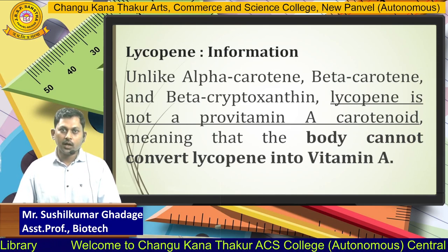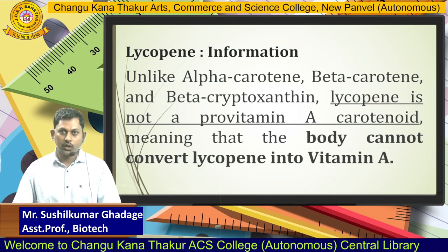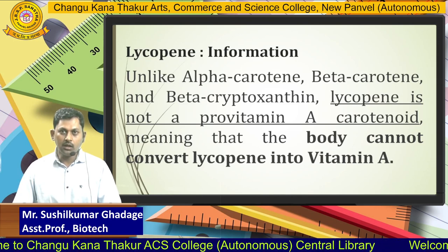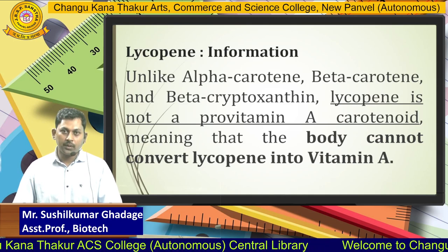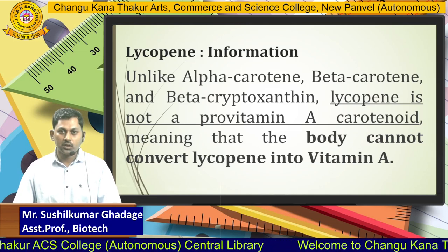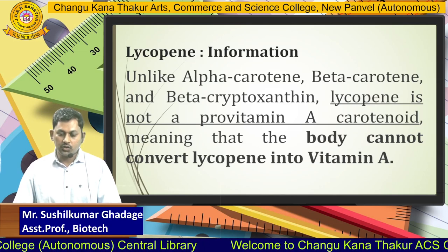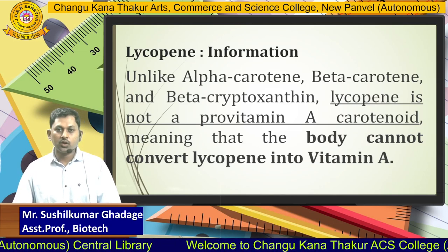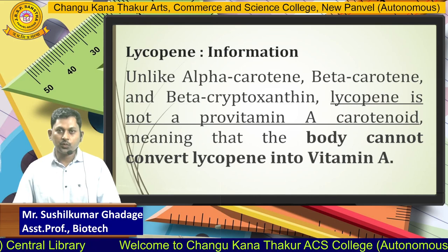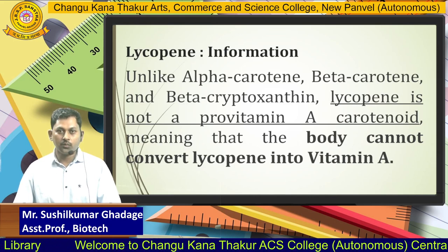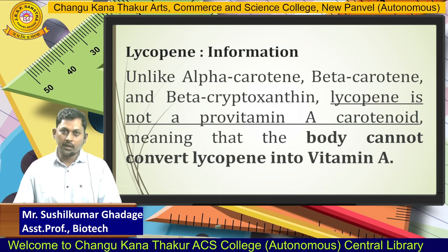Most carotenoids such as alpha-carotene, beta-carotene, or beta-cryptoxanthin act as pro-vitamin carotenoids and can serve as precursors for vitamin A. However, lycopene is not a pro-vitamin A carotenoid, and therefore our body cannot convert lycopene into vitamin A.